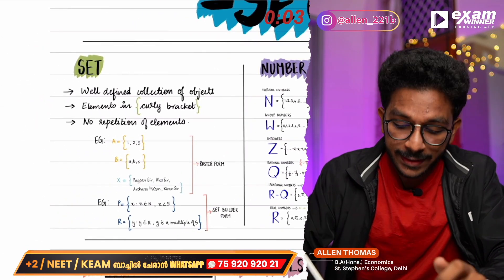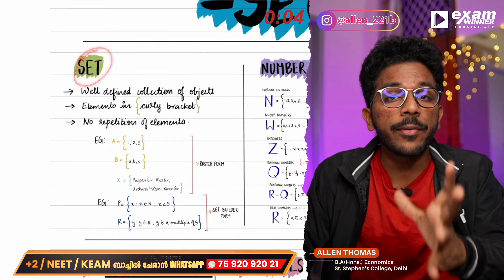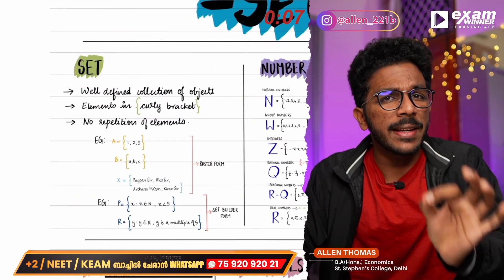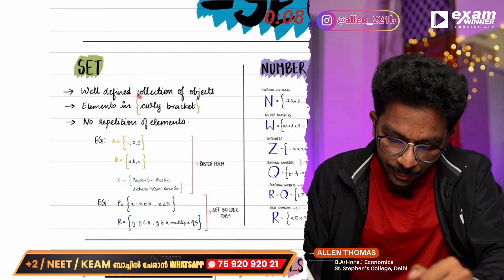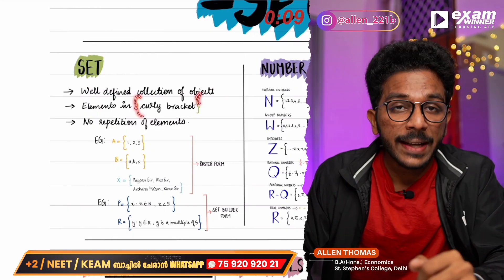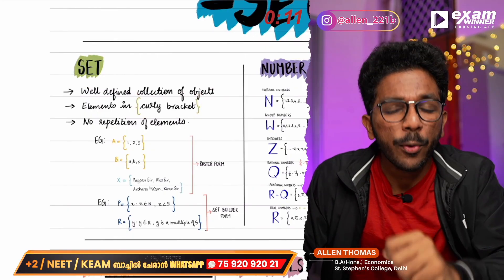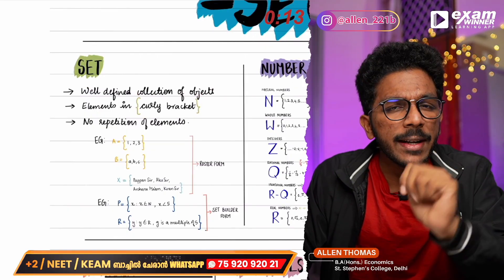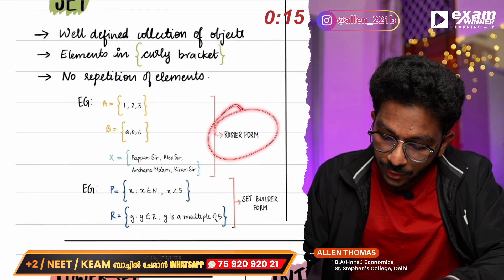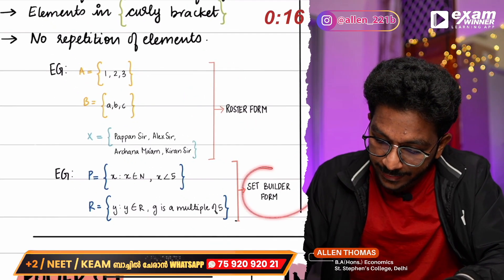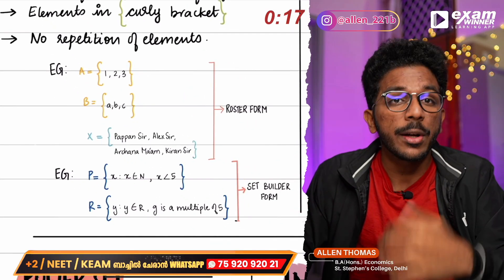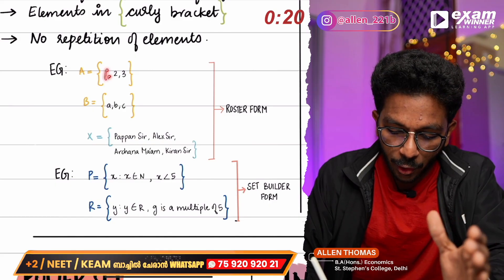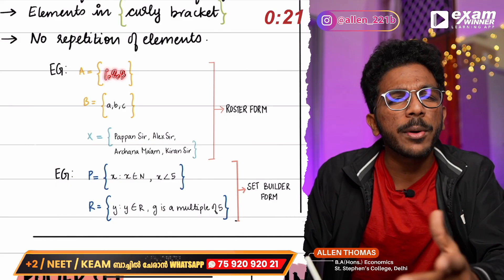If you have a set, what is the definition of the set? The set uses curly brackets. We have elements inside. The set can be written in roster form or set-builder form. In roster form, the set is written as 1, 2, 3.